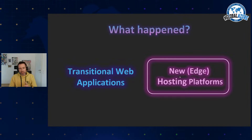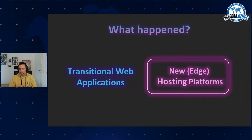Now let's talk about the second big change: new edge hosting platforms. We have different kinds of ways to host code now. Virtual machines were the first option in the cloud, but they didn't help much with cost benefits. You can run PHP and multiple applications there, but hosting is complicated and you don't get auto-scaling and the other benefits that new platforms offer.